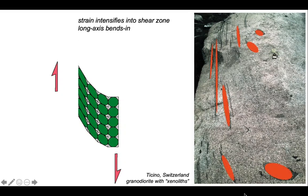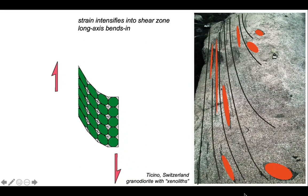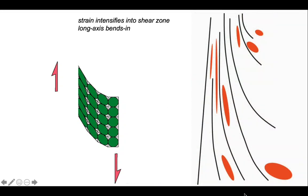We can fit ellipses to the shapes of the xenoliths in the granodiorite and we can trace out the fabric. There we go, let's interpret.